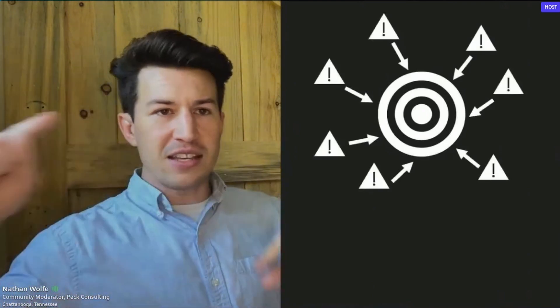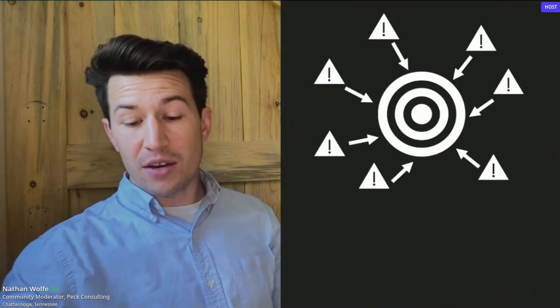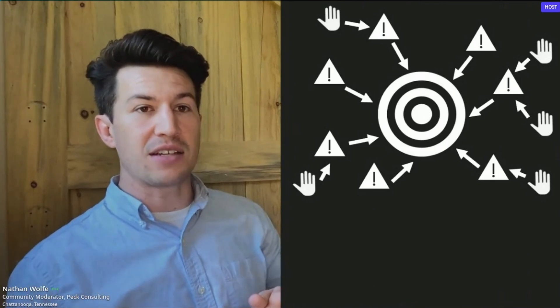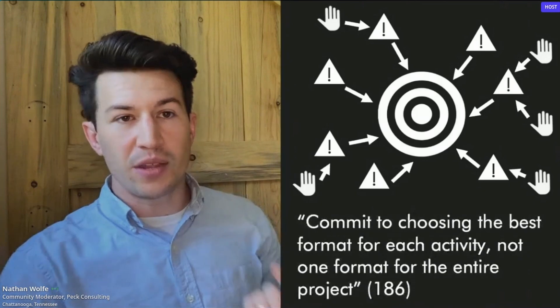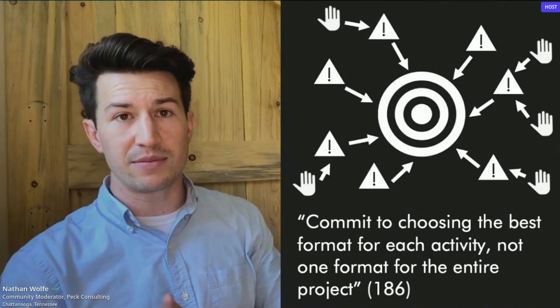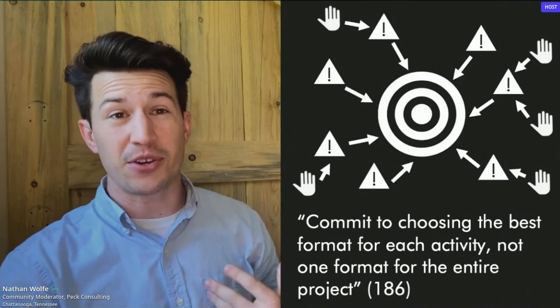As we get closer to our thought questions, let's take a step back and remember where we're at in the action mapping process. Cathy has laid out that nice visual: we have our target goal in the center. We've already developed a good list of the core crucial actions that need to be done on the job in order for that goal to be met. Within that, we have all those opportunities for hands-on practice activities. Cathy reminds us: we have to commit to choosing the best format for each activity — not one format for the entire project.